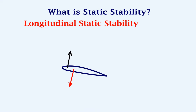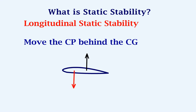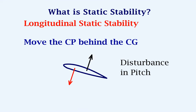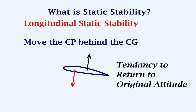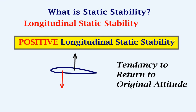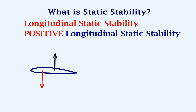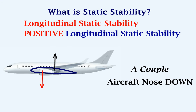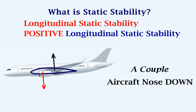Now let's keep the CP behind the CG. If there is a disturbance in pitch, the lift and weight forces will create a tendency to return to the original attitude. This is called positive longitudinal static stability, which is required on the aircraft. The lift and weight forces together form a couple which pushes the nose of the aircraft downwards.